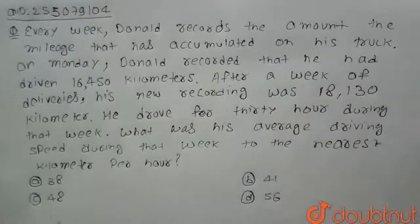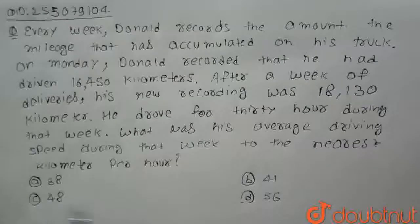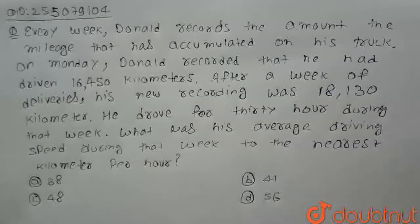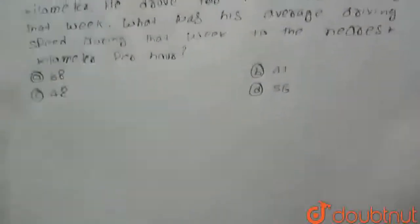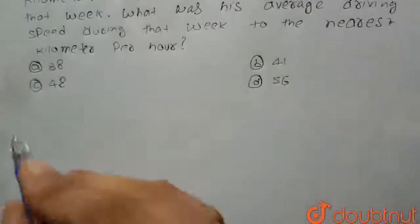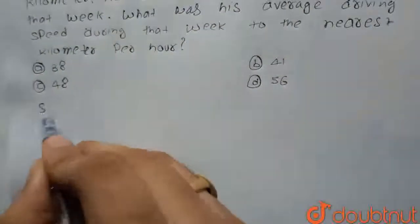So, what was his average driving speed during that week to the nearest km per hour? Let's see the options: A) 38, B) 41, C) 48, and D) 56. So guys, let's see the solution.